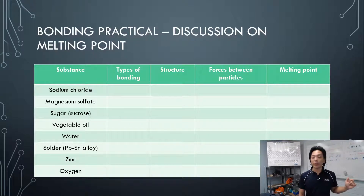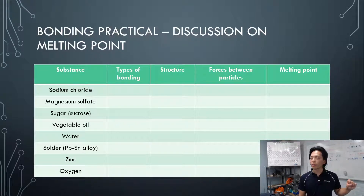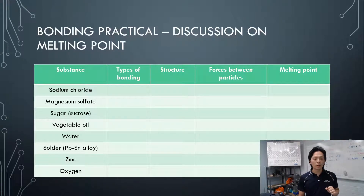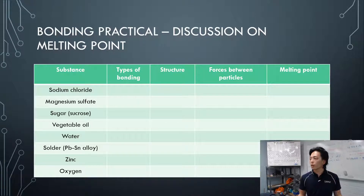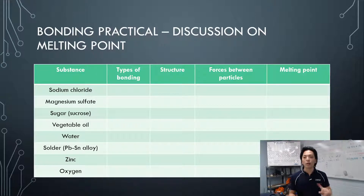What can you say about forces between particles now? If sodium chloride or magnesium sulfate doesn't melt easily and its melting point is very high, you can say the forces are strong. Ionic compounds cannot be molecular — they form large structures — so you say strong intramolecular force, specifically strong attraction between sodium and chloride ions.